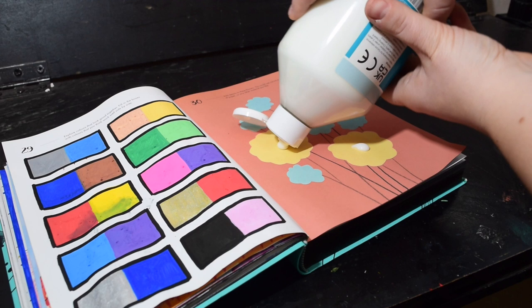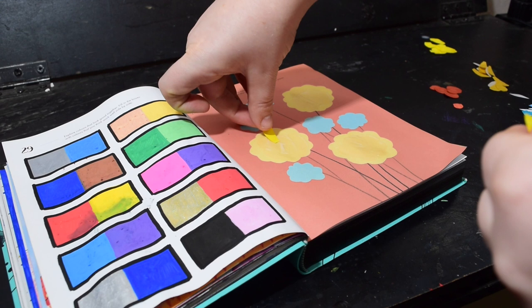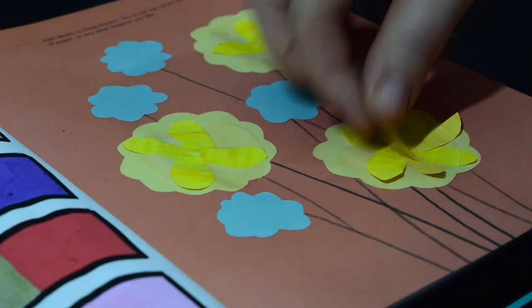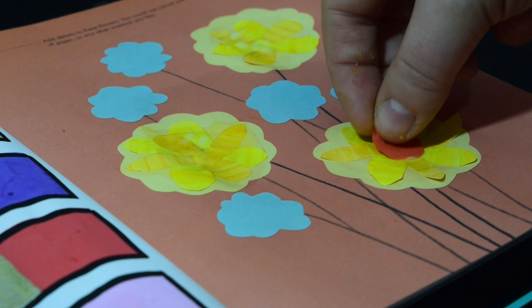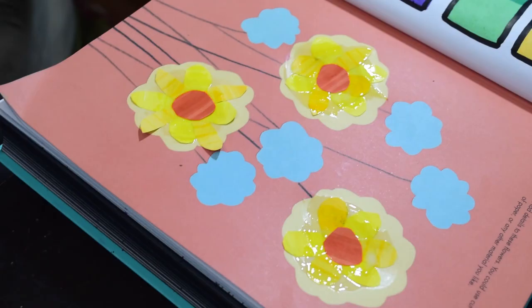I used PVA glue to stick them all to the flower which worked absolutely fine and I just slowly added more and more petals to these flowers until I felt that it looked pretty and nice and then of course I added that little orange dot into the middle to finish it off.